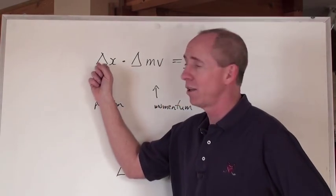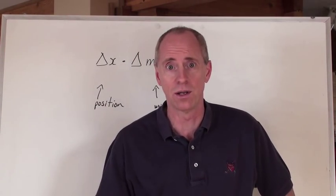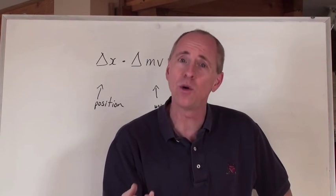Which means, if we can really nail where an electron is, we can't even determine even close to how fast it's going. And if we really knew how fast it was going, because it's so small, we really don't know where it is.